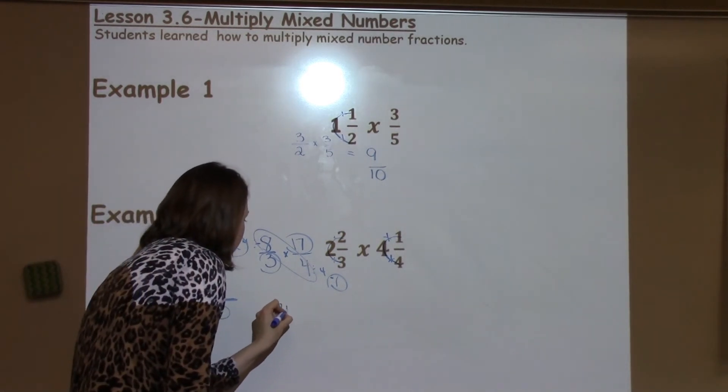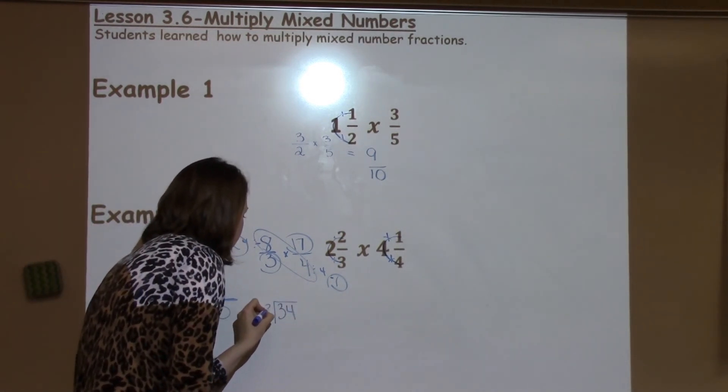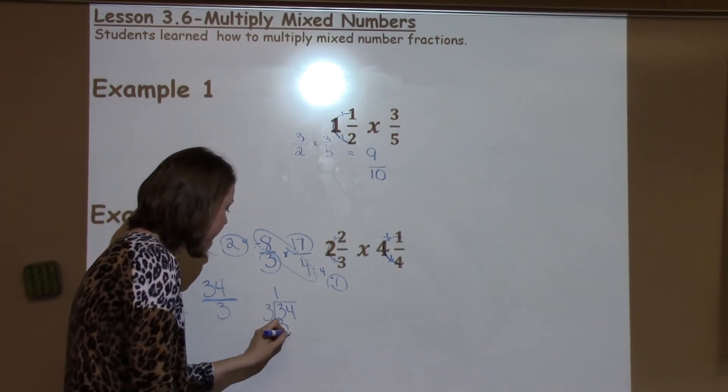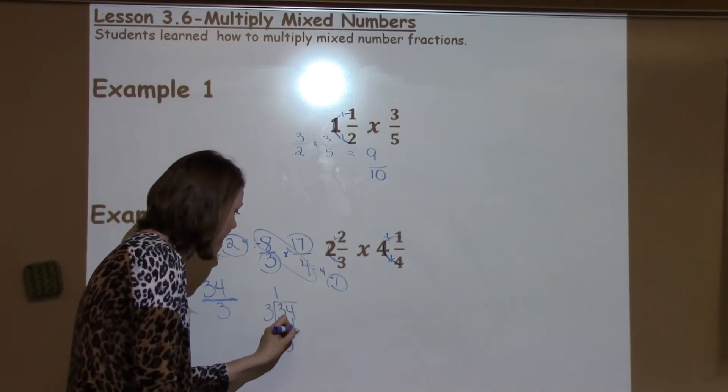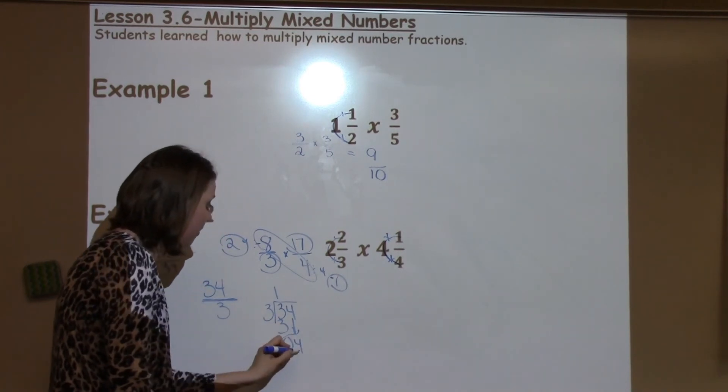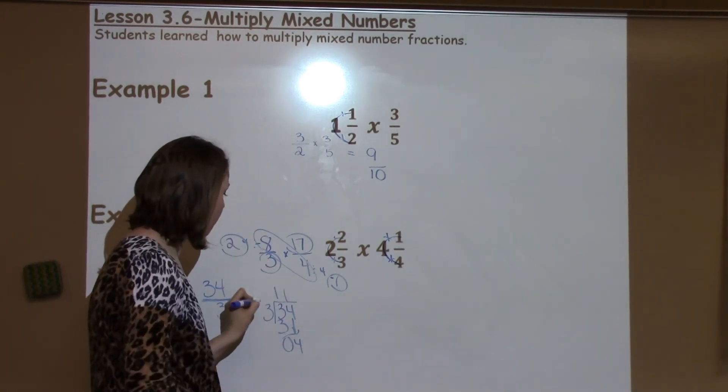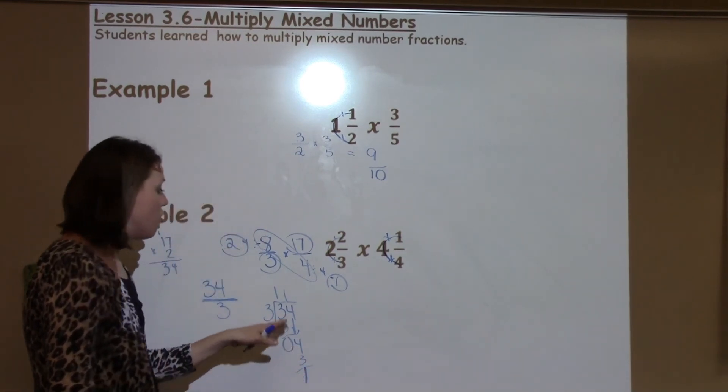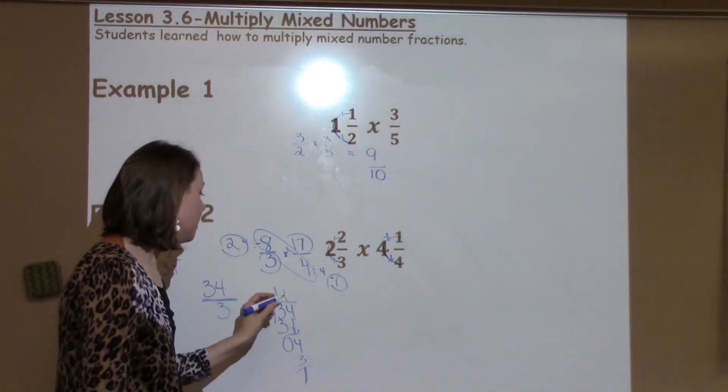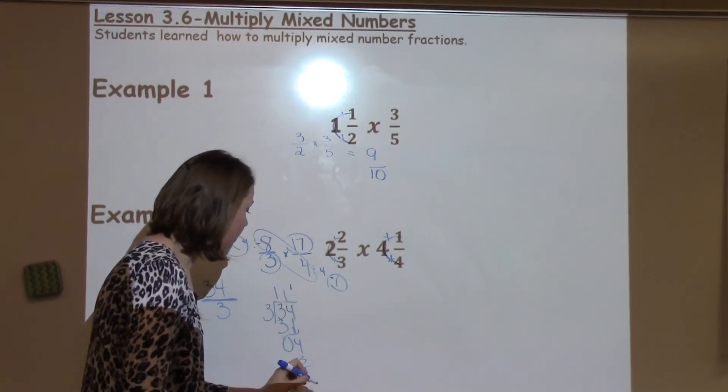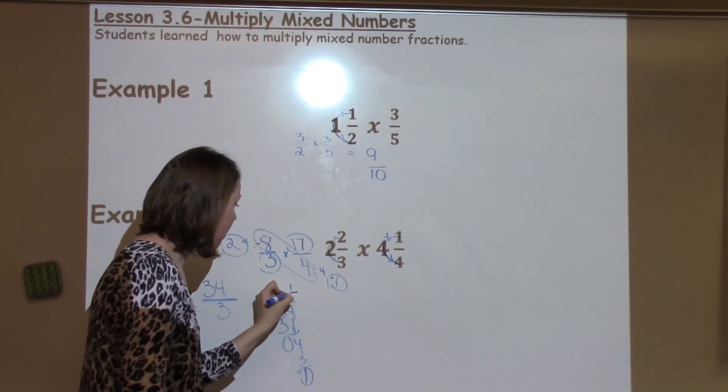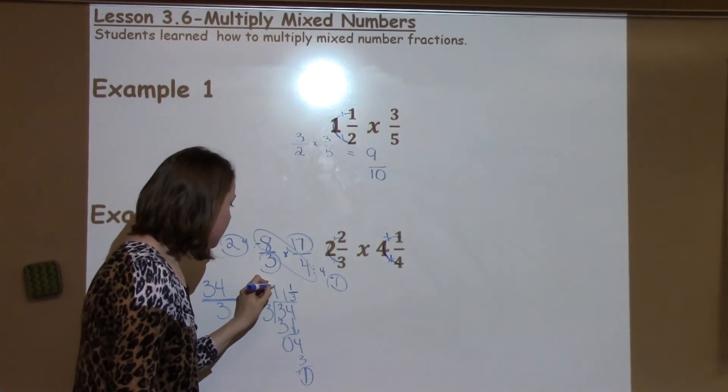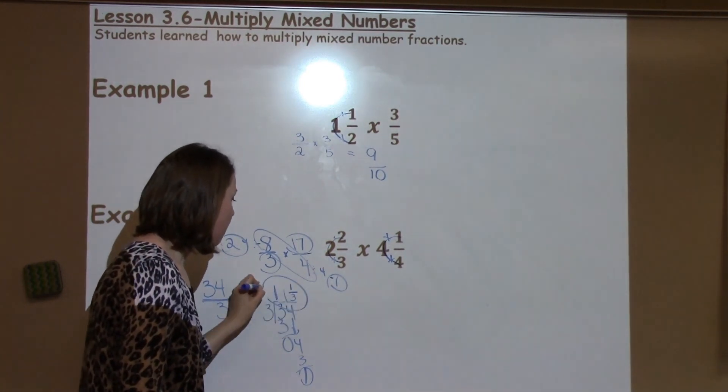When I take 34 divided by 3, I know 3 can go into 3 one time. Bring down my 4. Can 3 go into 4? Yes. One time. 1 times 3 is 3, with 1 left over. Notice there's nothing left to come down, so this is going to become my numerator, the 1 from here, becomes my numerator. Then I use my divisor as my denominator. So my answer is 11 and 1 third.